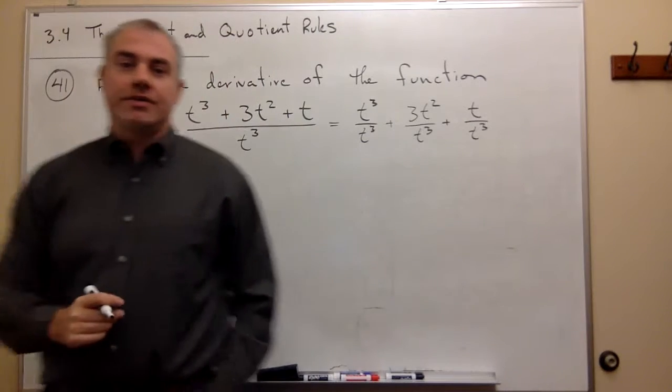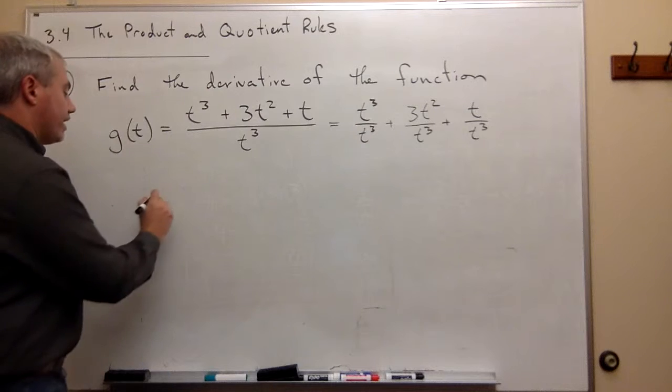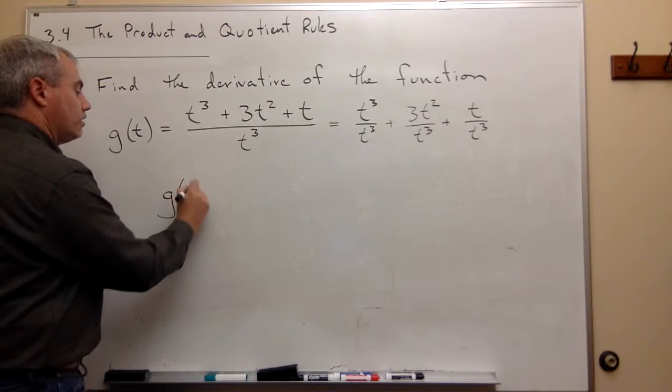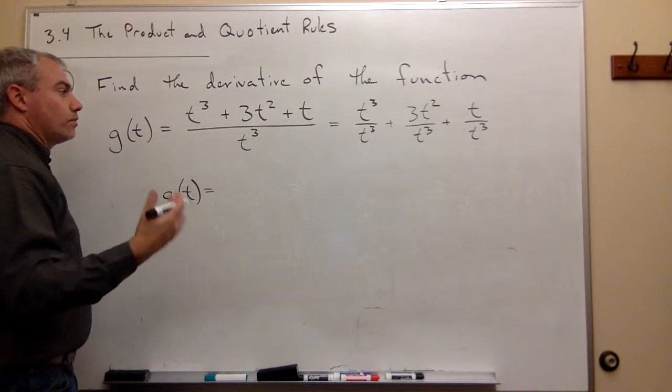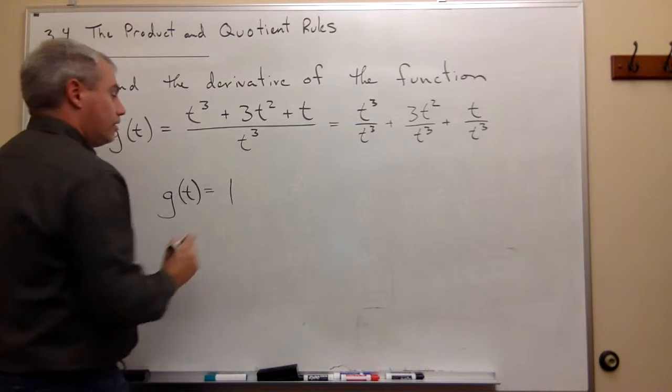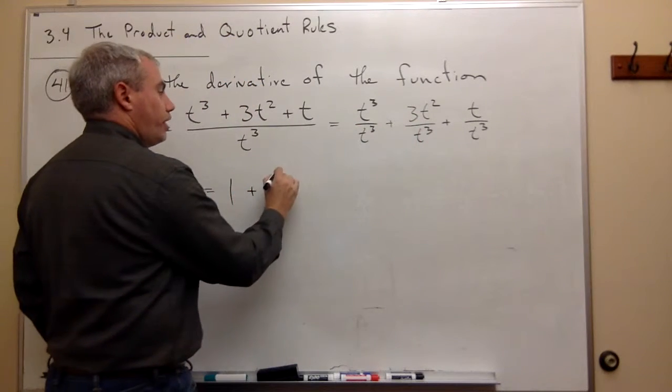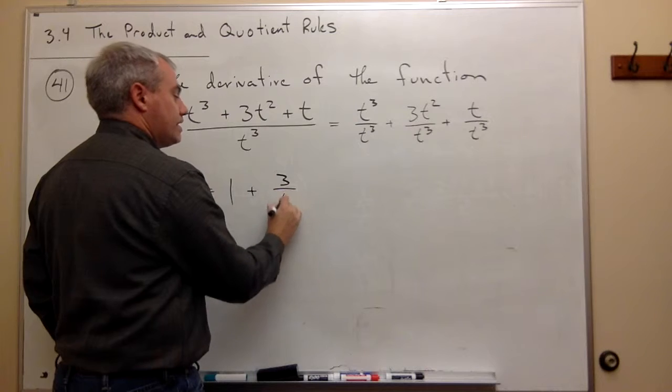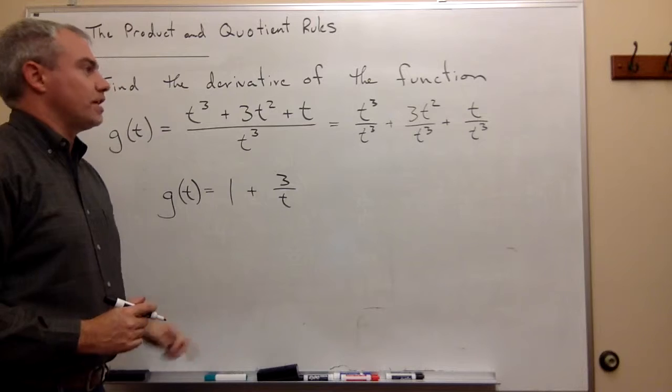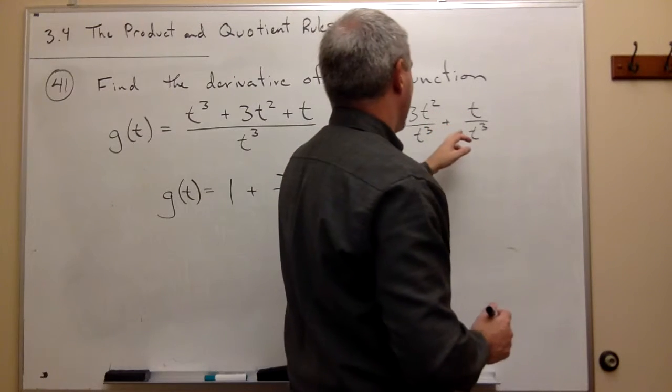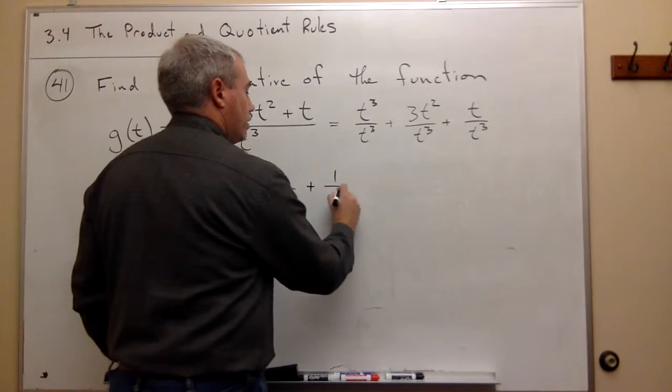All right, so now this is my function, and I could rewrite that again. So g of t is equal to, well, t cubed over t cubed is what? One. 3t squared over t cubed is 3 over t, two of the t's cancel, and I just get 3 over t. And t over t cubed is plus 1 over t squared.